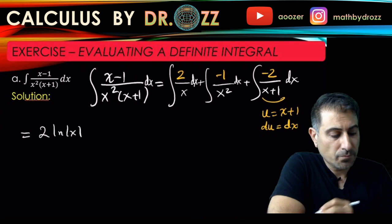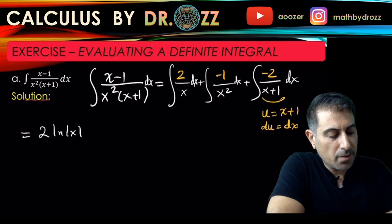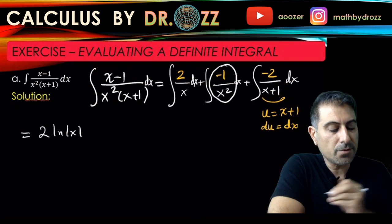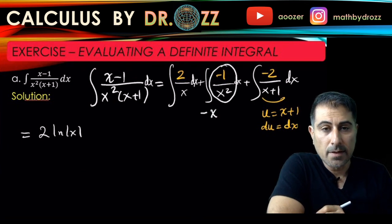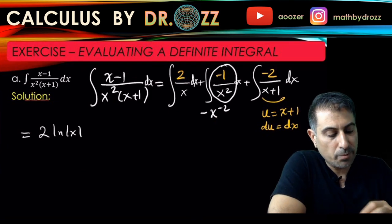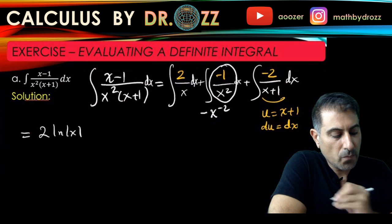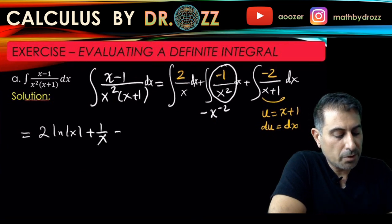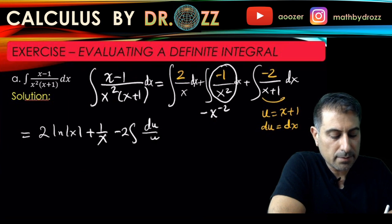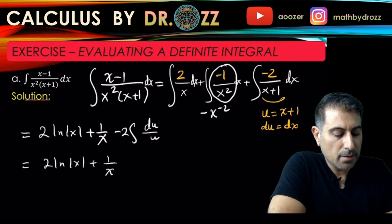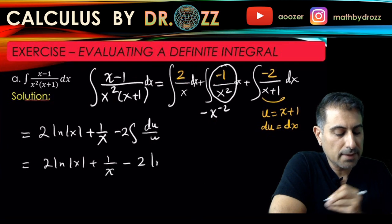The other two are just integrable. So first one is 2 times ln absolute value of x. The other one, you can write this as negative x to the negative 2, and integrate. That's negative x to the minus 1 divided by minus 1. That's just 1 over x. And the other one is minus 2 du over u. So in turn, 2 ln x plus 1 over x minus 2 ln absolute value of u plus c.